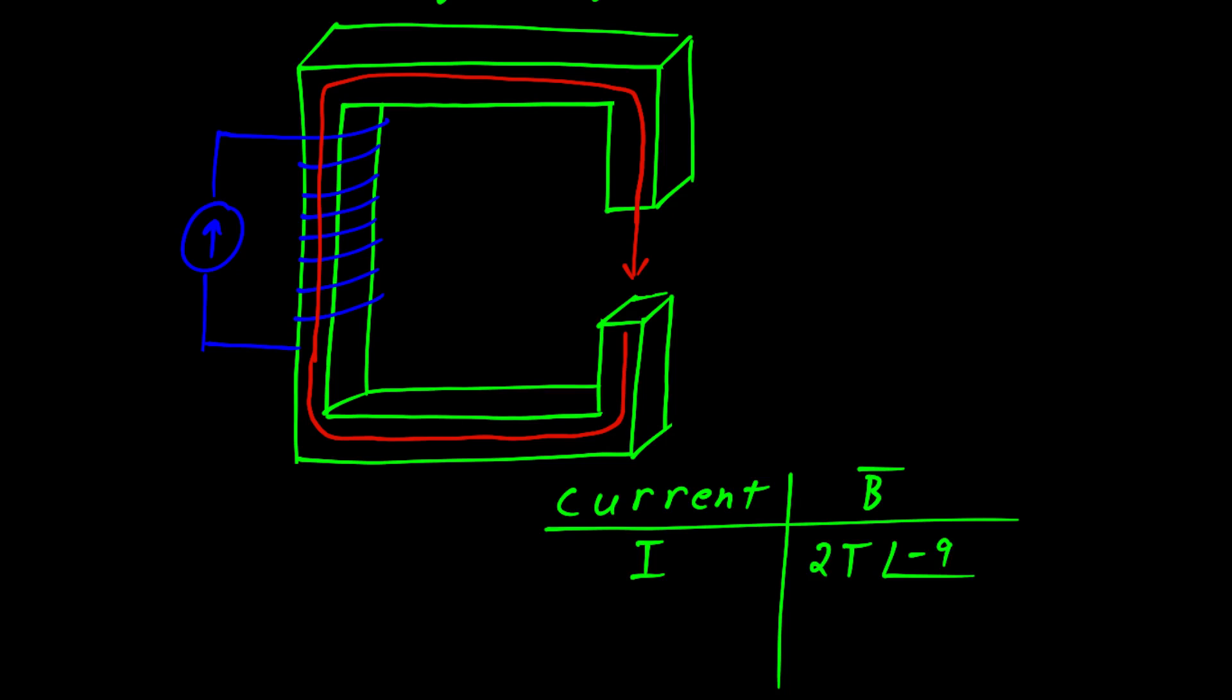Now, we can reverse the direction of the current source. When we do this, the direction of the magnetic field flips. We now have a B field of two Teslas at an angle of 90 degrees.